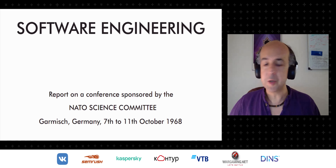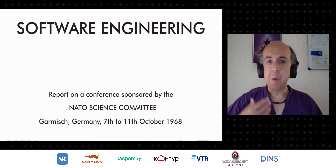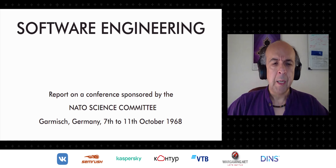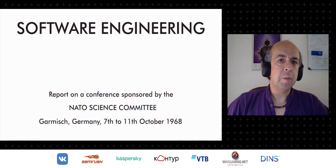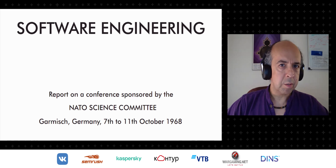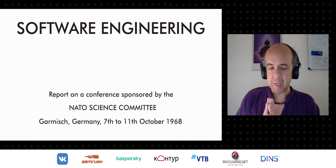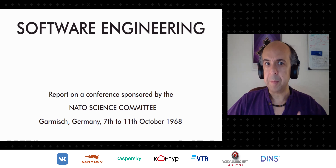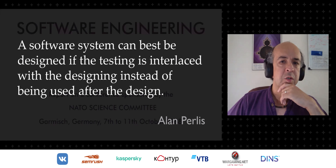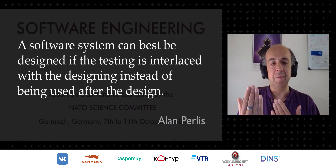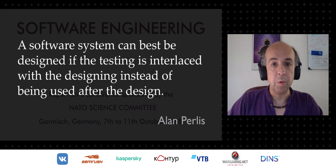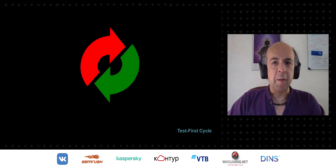The 1968 NATO Software Engineering Conference in Garmisch, Germany is quite famous. It helped popularize the term 'software engineer' — though the term was developed by Margaret Hamilton, who worked for MIT on the Apollo software. When you read that document, you discover people were not necessarily advocating for separating everything into phases. A software system can best be designed if the testing is interlaced with the designing instead of being used after the design — that's Alan Perlis, the first winner of the Turing Award.